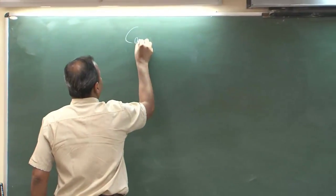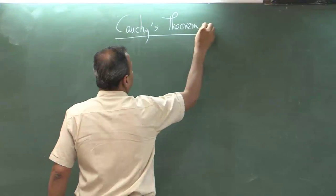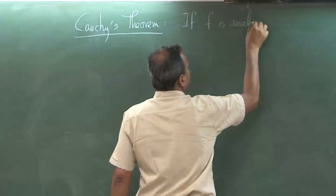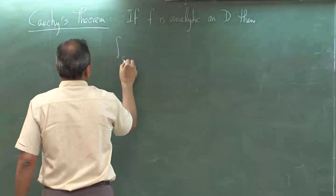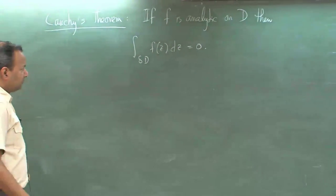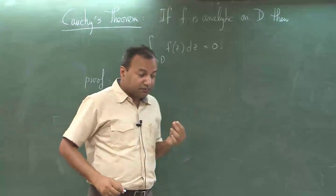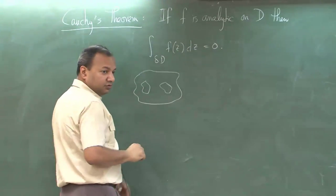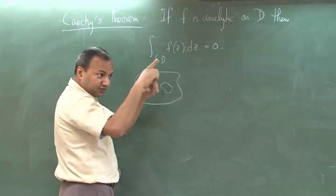Cauchy's theorem. We split this proof into three parts. Part 1 is to divide the domain into a sort of generalized triangle — not necessarily with straight lines, but smooth curves. That is important: the three sides must be smooth curves.